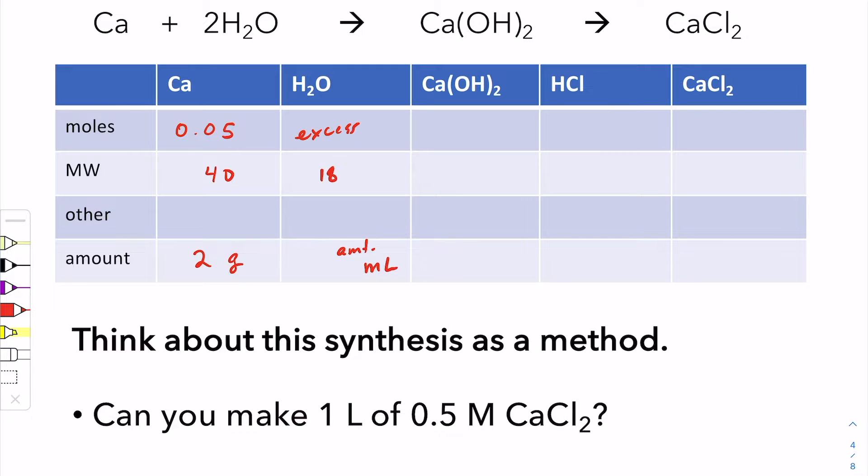This will give you 0.05 moles of calcium hydroxide. You can look up that molecular weight and use it to calculate the theoretical yield of calcium hydroxide. You could argue that this isn't really important, however, because we're not isolating the calcium hydroxide. We're never going to measure our yield in lab. This would be just the theoretical yield.